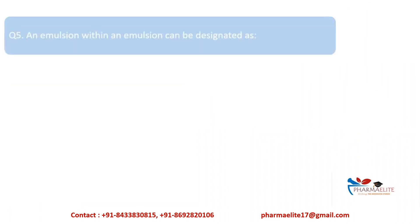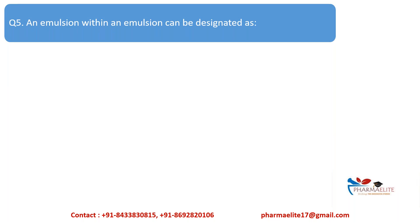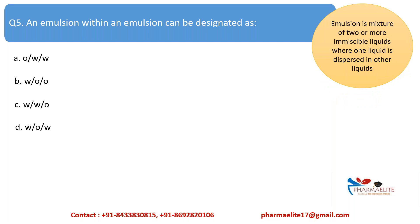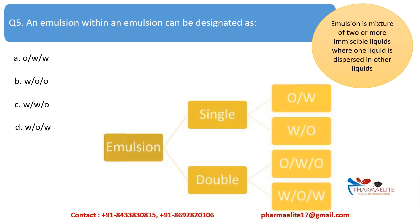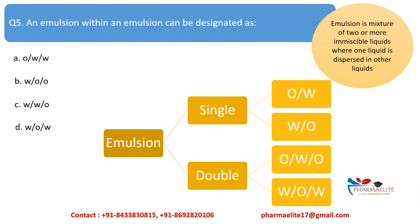The last question of the day is: an emulsion within an emulsion can be designated as — and the options are provided. Basically, an emulsion is a mixture of two or more immiscible liquids where one liquid is dispersed in another. Emulsions can be of two types: single emulsion, which includes oil-in-water and water-in-oil emulsions; and double emulsion, which includes oil-in-water-in-oil and water-in-oil-in-water. These two are essentially emulsions within an emulsion. So the answer is option D — water-in-oil-in-water is the designation of an emulsion within an emulsion.